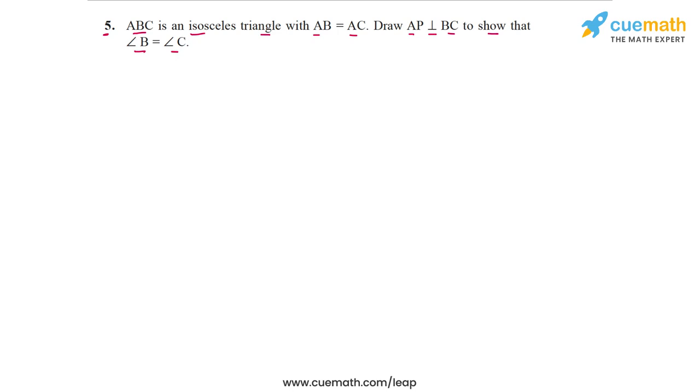We have triangle ABC which is isosceles with AB equal to AC, as indicated by the markers. The problem says to draw AP perpendicular to BC, so let's do that.